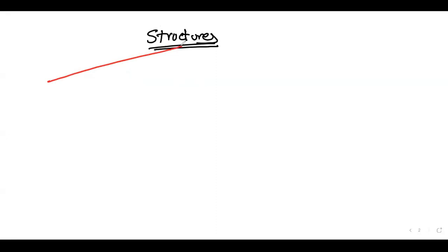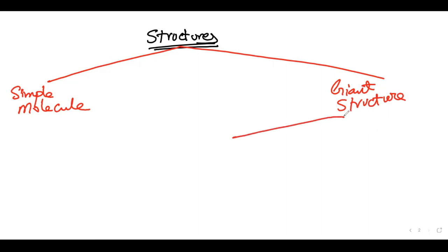So we know that the structure has either a simple molecule or a giant structure. Now simple things are very simple. And the giant structures are just three types.